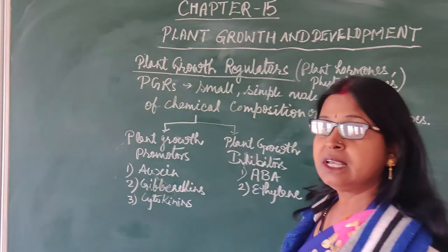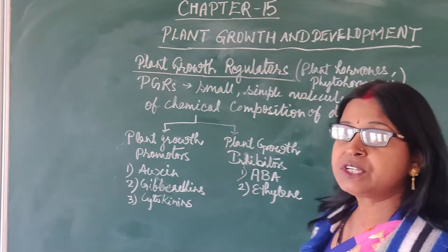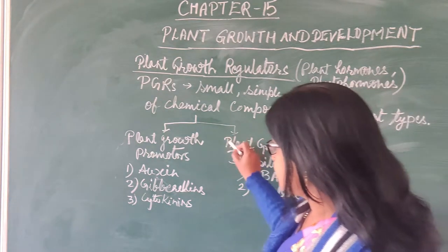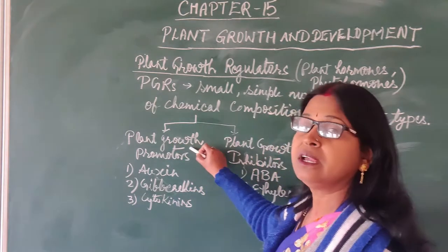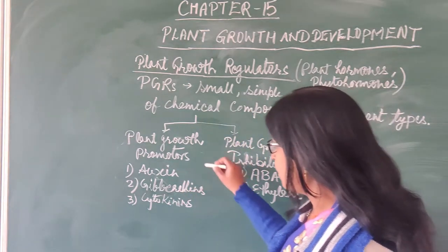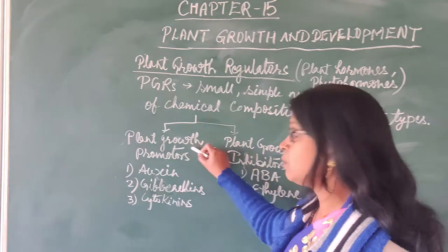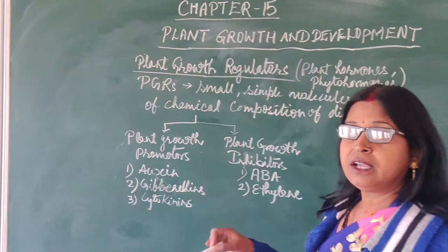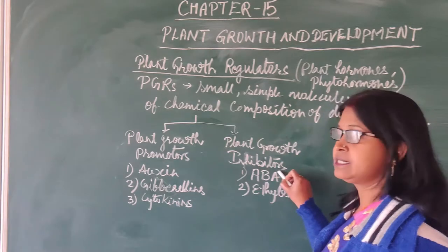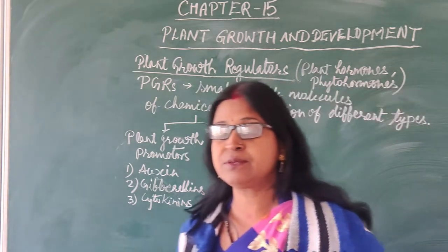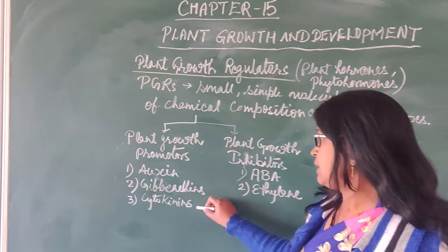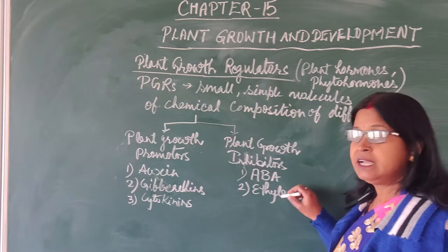Plant growth regulators are of two types depending on which type of activity they control. Some hormones induce growth and are known as plant growth promoters, while those inhibiting activities are known as plant growth inhibitors. There are five types of hormones in plants: auxin, gibberellin, cytokinin, ABA (abscisic acid), and ethylene.